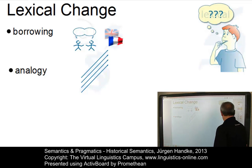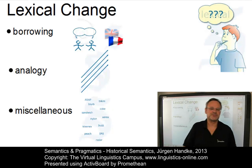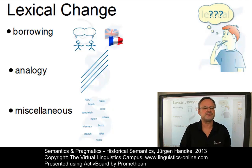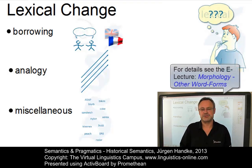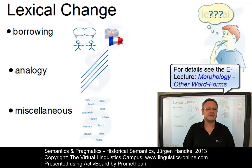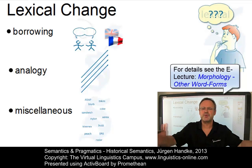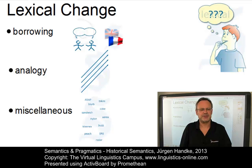And then there is the last group of miscellaneous processes. Apart from borrowing and processes based on analogy, there are various other sources of new words in a language. These miscellaneous lexical processes include creations from all areas of word formation — for example, just to name two of them, acronyms such as 'radar' or blends such as 'brunch'.